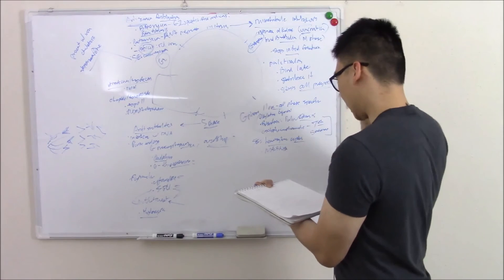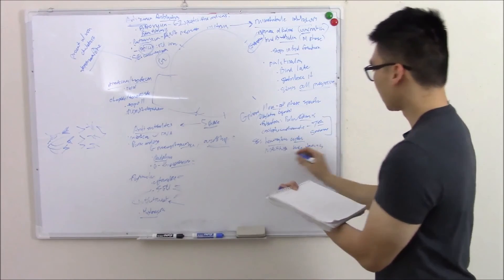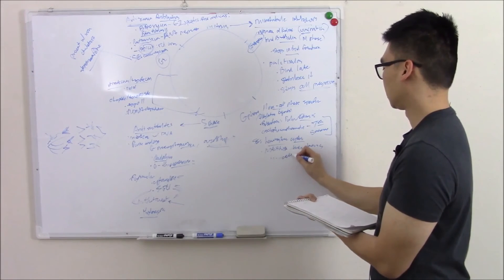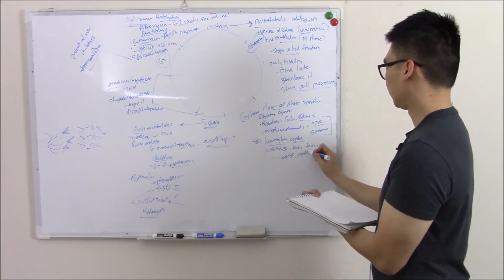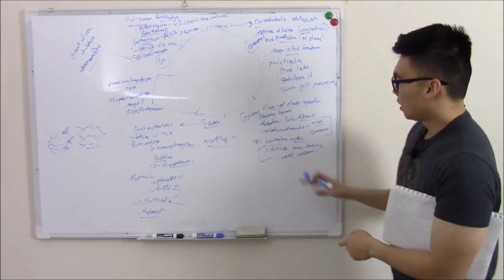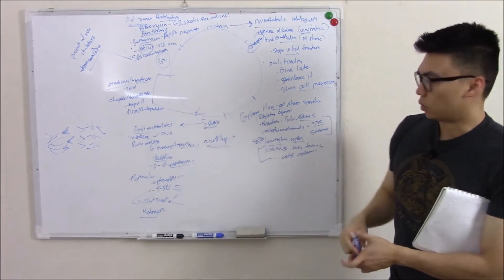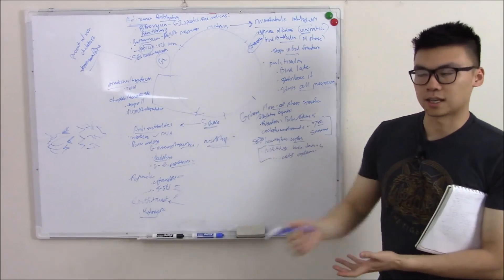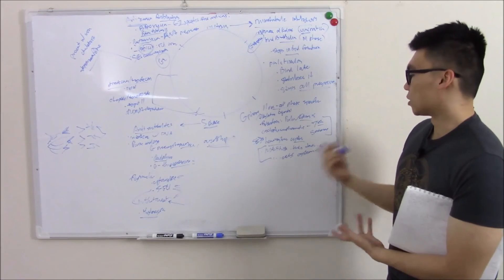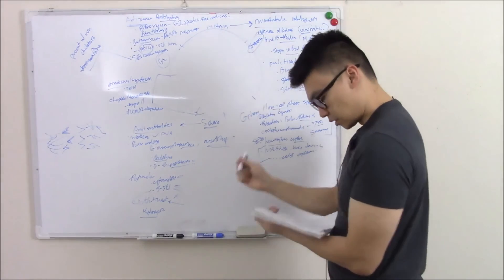How can we prevent that? We can prevent it with mesna. This is something that binds those toxins. Something else we can give, N-acetylcysteine. This is very characteristic to hemorrhagic cystitis. So questions I usually see will talk about the hemorrhagic cystitis and make you work backwards, ask you about the drug, or ask you about what position it works on, or how do you prevent it, etc. So now you won't be caught off guard.